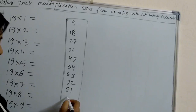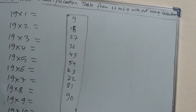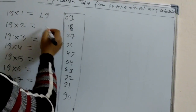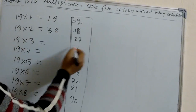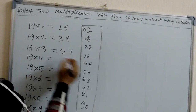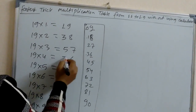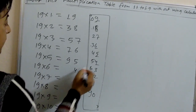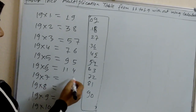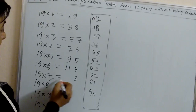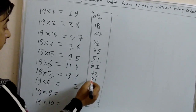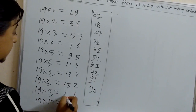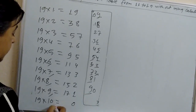Last digit same, 0 plus 1 is 1. Last digit 7 is same, 1 plus 2 is 3. Last digit 6 is same, 2 plus 3 is 5. Last digit 5 is same, 3 plus 4 is 7. Last digit 4 is same, 4 plus 5 is 9. Last digit 3 is same, 5 plus 6 is 11. Last digit 2 is same, 6 plus 7 is 13. Last digit 1 is same, 7 plus 8 is 15. Last digit 0, 8 plus 9 is 17. Last digit 0, 9 plus 10 is 19.